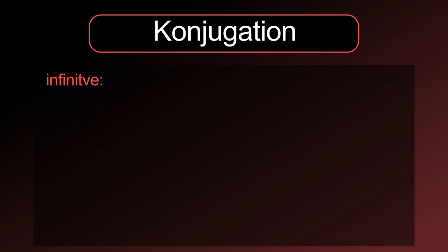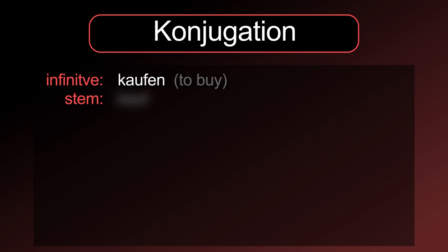Konjugation. The basic form of a verb is the infinitive. For example, kaufen. Every German verb has a stem. The stem of kaufen is kauf. To build the infinitive, we have to add the ending -en. -en is almost always the ending for verbs in the infinitive.